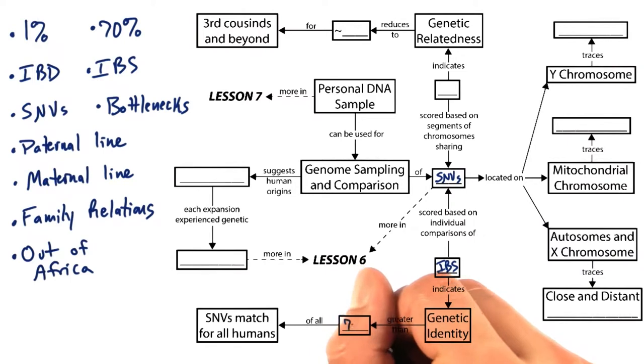We have greater than 70% of for all SNV matches in humans. Remember that you share at least 70% IBS with even the most distantly related human on the planet. This is a rough approximation.